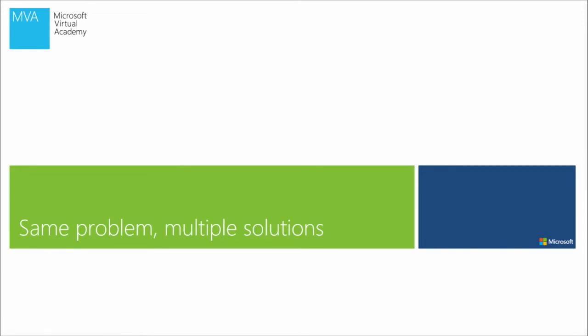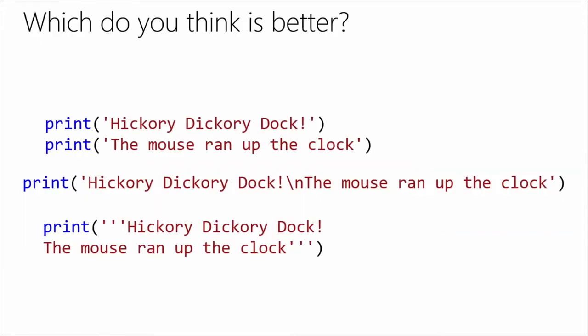Same problem, multiple solutions. We have three different ways of printing text over multiple lines — which do you like best? So we've got multiple ways that we can do something. What's the best way?